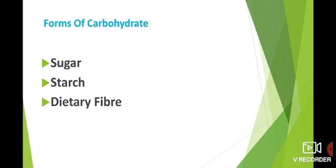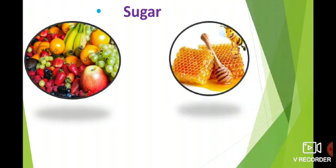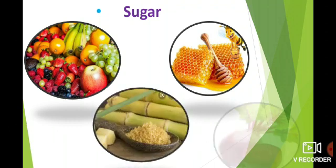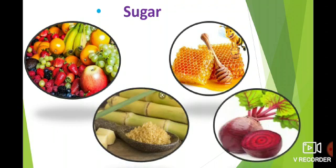The forms of carbohydrates are sugar, starch, and dietary fiber. Let us learn about the forms and sources of carbohydrate. First: sugar. Sugar is a form of carbohydrate and its sources are fruits, honey, cane sugar, and sugar beet.